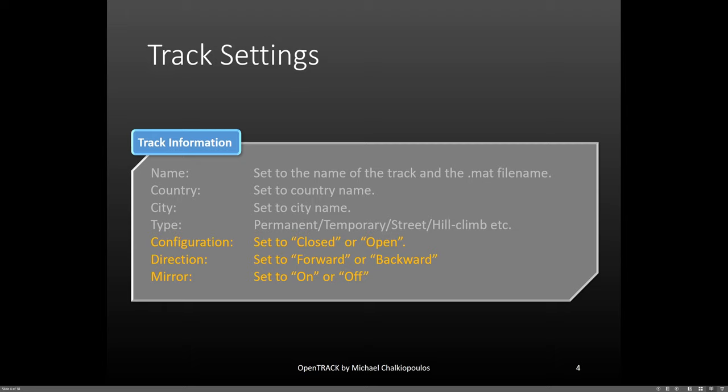But the ones that have an effect and drive the model in the .mat file are the configuration, the direction, and the mirror option. Also note that the .mat model file name is defined by the name of the track in the Excel or CSV file and not the name of the Excel or CSV file itself.